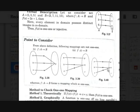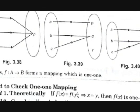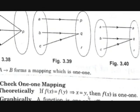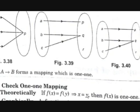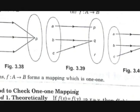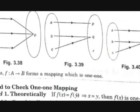Now let's see the method to check if a function is a one-one mapping. The first method is the theoretical method: if f(x₁) = f(x₂), then it should imply x₁ = x₂. This means if the function has the same output values for two inputs, those inputs must themselves be equal — confirming we have seen the image of the same value.